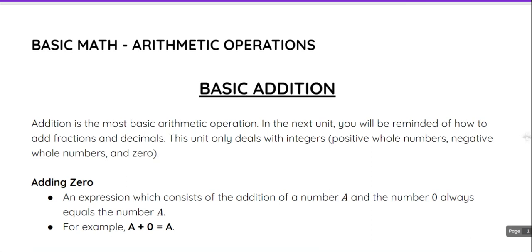So to start, addition is the most basic arithmetic operation. In the next unit we will look at how to add fractions and decimals, but in this unit we will focus only on integers, which are positive whole numbers, negative whole numbers, and the number zero.